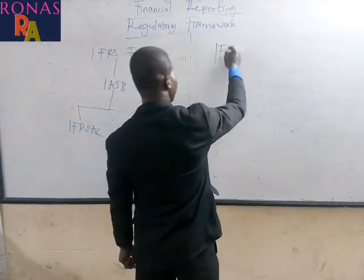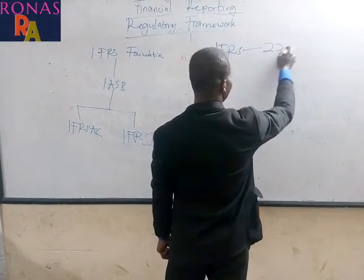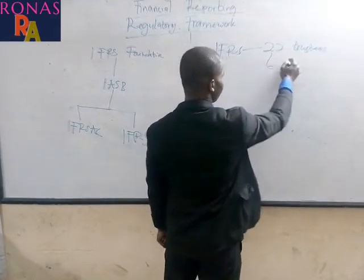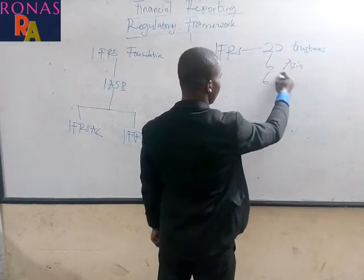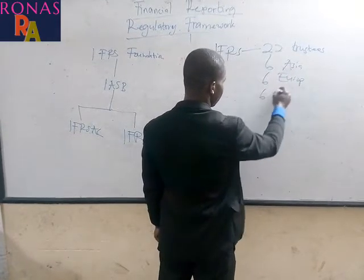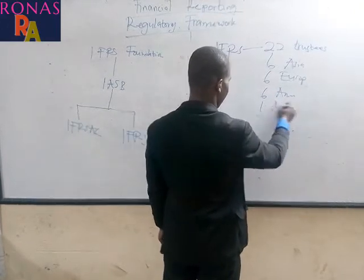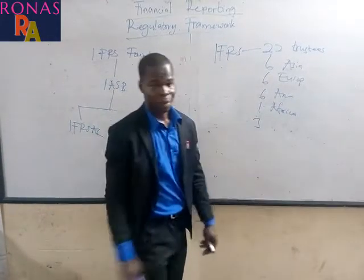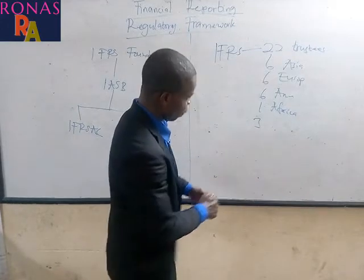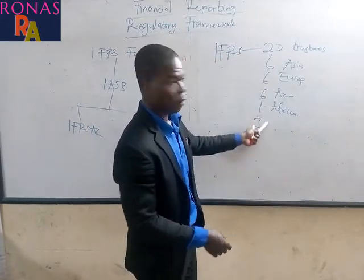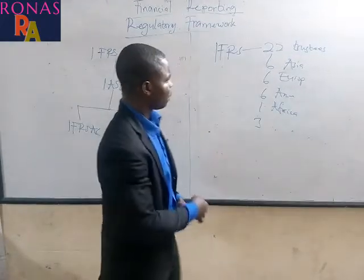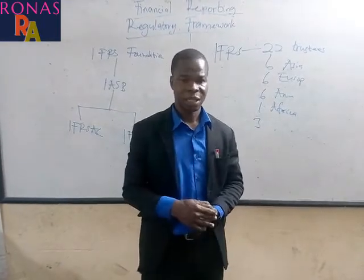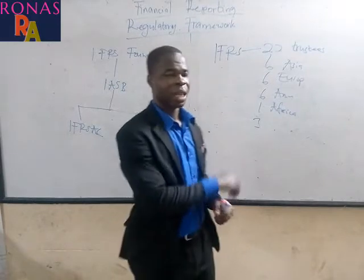The IFRS Foundation is composed of 22 trustees: 6 from Asia, 6 from Europe, 6 from America, 1 from Africa, and 3 from any other area. Ghana as a country adopted and prepares its financial statements in accordance and compliance with the International Financial Reporting Standards, and Ghana started this adoption in 2007.